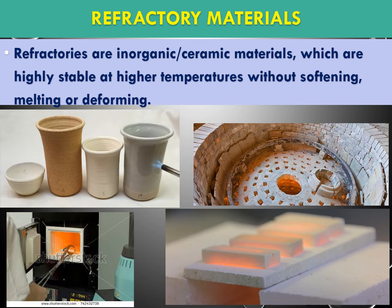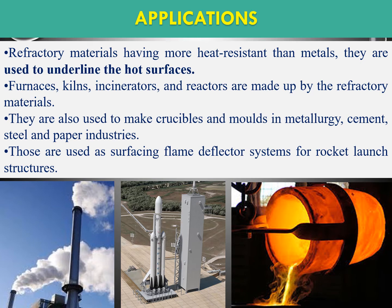Examples of refractory materials include crucibles, kilns, and muffle furnaces. The main property of refractory materials is that they must be highly stable at high temperatures with high melting points. Some refractory materials are resistant to thermal heat conduction, which is why they are used as lining for hot surfaces, while others are good heat conductors used to prepare furnaces, kilns, incinerators, and reactors.